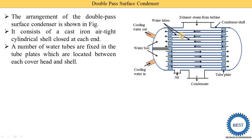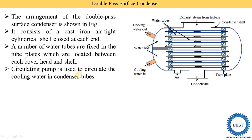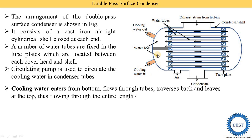A circulating pump is used to circulate the cooling water through the condenser tubes. Cooling water enters from the bottom, flows through the tubes, travels back, and leaves at the top — thus flowing through the entire length of the condenser twice. This is one round, and this is the second round. That is why it is called the double pass surface condenser.